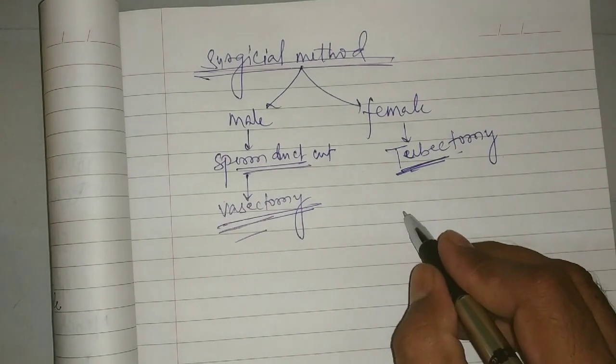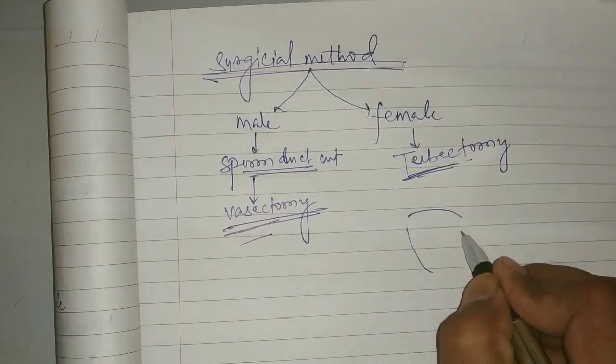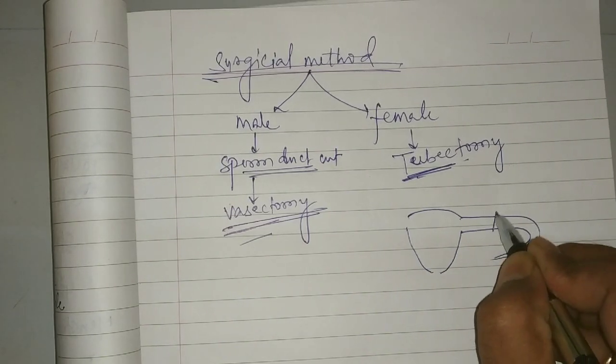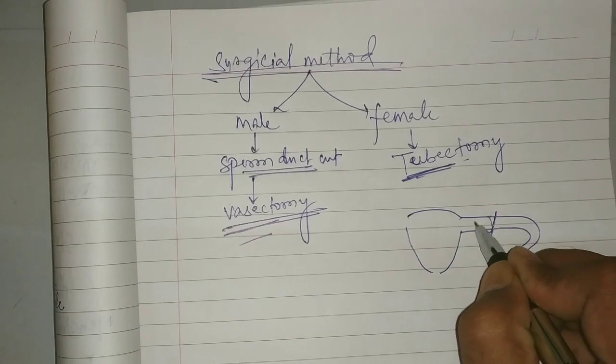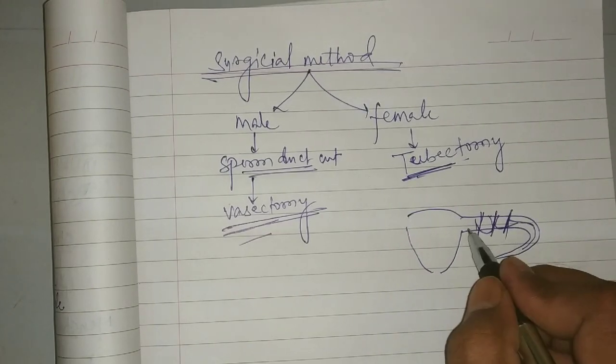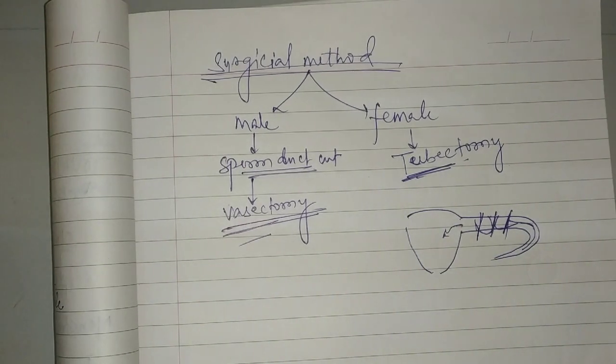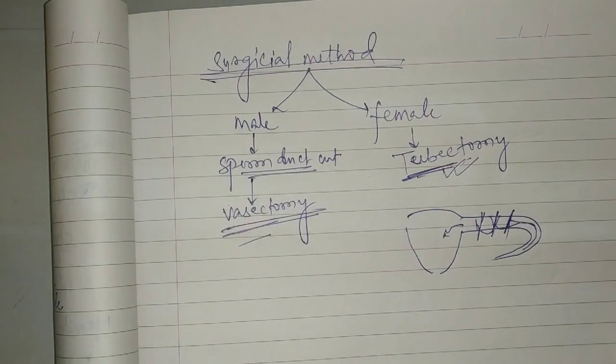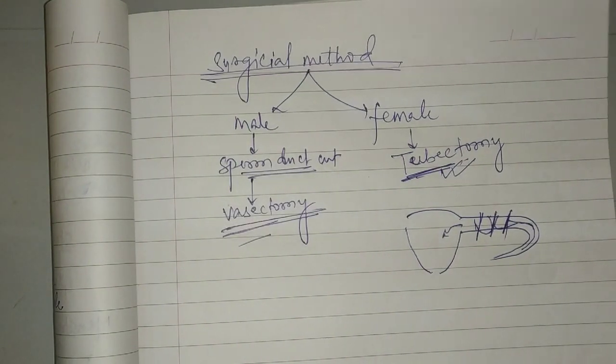In vasectomy, we cut the sperm duct in males. In tubectomy, we cut the fallopian tube. If the fallopian tube is cut from here and tied here, the ova will never reach the uterus. We call this tubectomy. The most effective method is the surgical method.